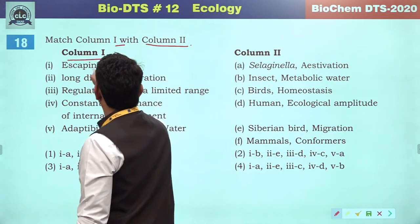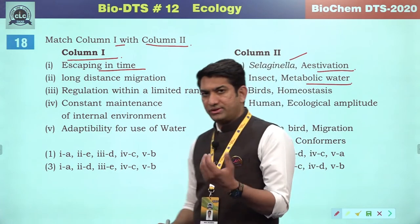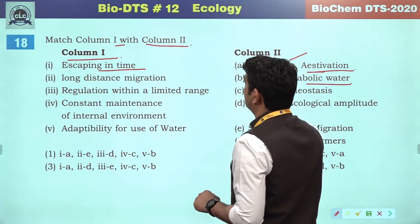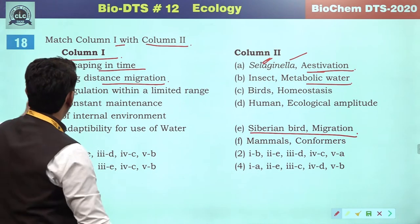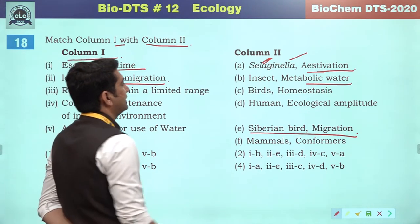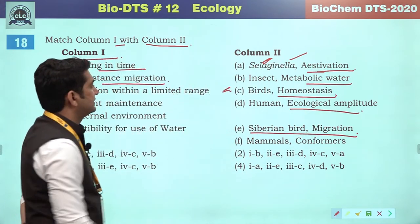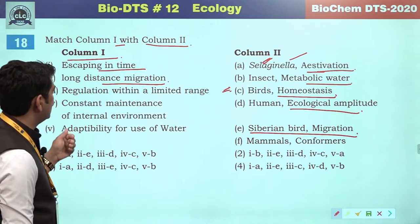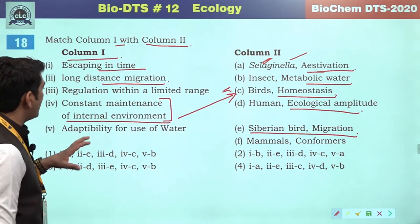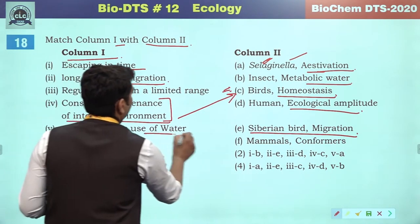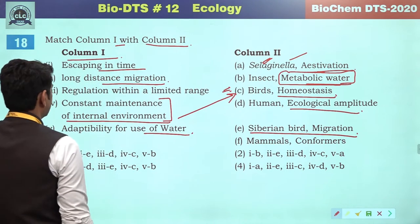Question 18: match column one with column two. Column one has activities of living organisms with examples. Escaping in time refers to estivation. Long distance migration is also a mechanism of escaping adverse conditions. Adaptability for the use of metabolic water — organisms that use metabolic water do not rely on external sources of water. According to this match, the correct answer will be the first option.